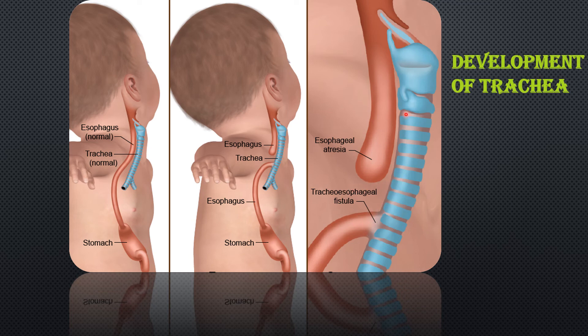Another one is esophageal atresia. Usually, the esophagus has to be connected to the stomach. In this case, there is no re-canalization of the esophagus, or it may not be connected to the stomach. This kind of birth defect is called esophageal atresia. A very important thing is when you read about the development of trachea, you must know what is tracheoesophageal fistula.